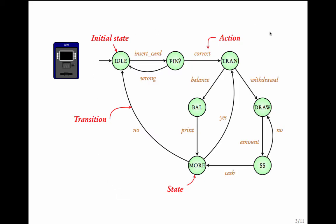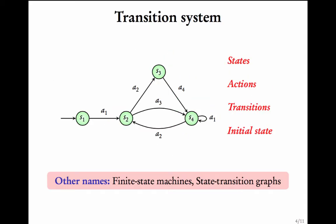This kind of a diagram consisting of states, actions and transitions is called a transition system. There are other names to it, finite state machines, state transition graphs, etc. We will be using the word transition system in this course.